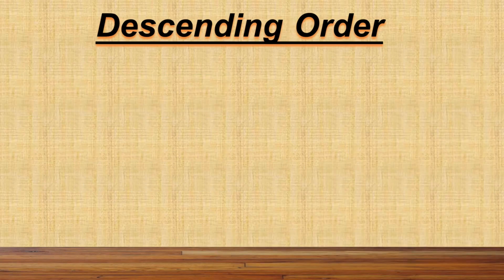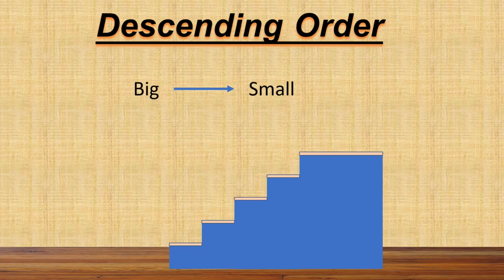Descending order means arranging the numbers from biggest to smallest. That is, big to small. Or, if we move from upstairs to downstairs, we will call it as descending order. Kids, always remember that in descending order, the number always keeps on decreasing.